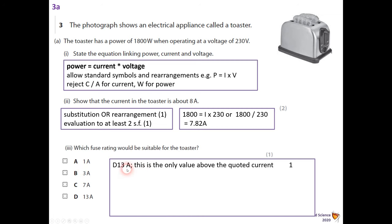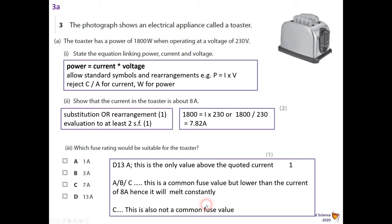Well they said it should be answer D which is 13A. This is the only value above the quoted current. A, B and C are common fuse values but lower than the current so they would melt constantly, and C is not a common fuse value so they would reject it because of that.